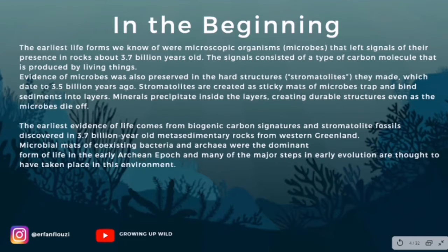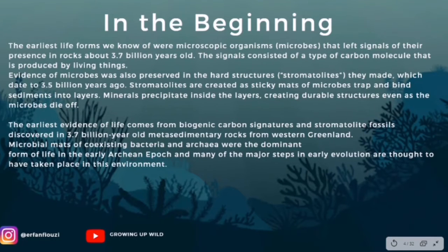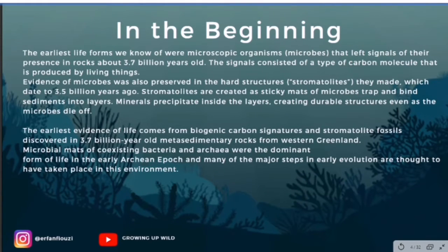Stromatolites are created as sticky mats of microbes trap and bind sediments into layers. We can see all these circle-like structures in fossils. Minerals precipitated inside the layers, creating durable structures even as the microbes died off. The earliest evidence of life comes from biogenic carbon structures and stromatolite fossils discovered in 3.7 billion-year-old metasedimentary rocks from western Greenland. Microbial mats of coexisting bacteria and archaea were the dominant forms of life in the early Archean epoch, and many of the major steps in early evolution are thought to have taken place in this environment.